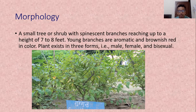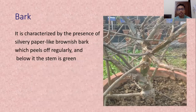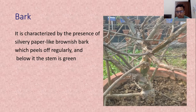The morphology of this plant: it is a small tree or shrub with spinous branches, nearly reaching a height of 7 to 8 feet. The young branches are aromatic and brownish red in color. This plant is found in three forms — male, female, and bisexual. The bark is characterized by a silvery pepper-like brownish appearance which peels off regularly. Below the silvery bark, the stem is green in color.